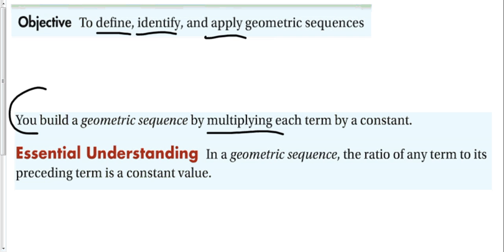And our essential understanding, what you should know by the end, is in a geometric sequence the ratio of any term to its preceding term is a constant value. This value has a name. In arithmetic sequences we call it a common difference, but in geometric sequences we call it a common ratio.